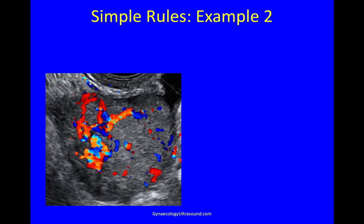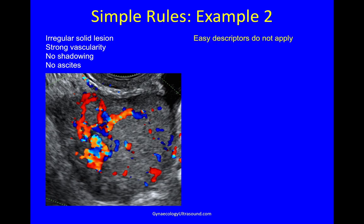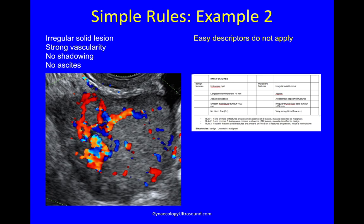Another simple rules example: this lesion is irregular and solid with strong vascularity, no shadowing, and no ascites. Easy descriptors don't apply — if it were a postmenopausal woman with ascites it would, but there's no ascites. On IOTA features there are no benign features, there's one malignant feature of irregular solid, and there's very strong blood flow. So on simple rules this would be malignant. This was a metastasis from a bowel primary to the ovary.